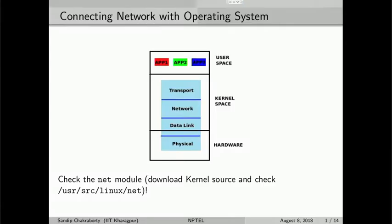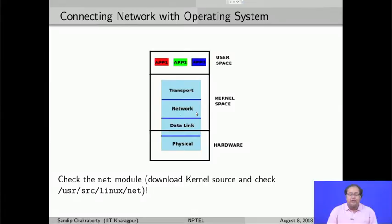System calls transfer user requirements to the kernel, performing corresponding kernel operations at the Linux or Unix kernel. The entire protocol stack implemented inside the kernel is accessed through operating system system calls. As a pointer for further exploration, you can look into the protocol stack implementation inside a Unix kernel — if you download the Unix kernel source, you can check the net module under the Linux source at net, and see the entire implementation of the kernel protocol stack there.